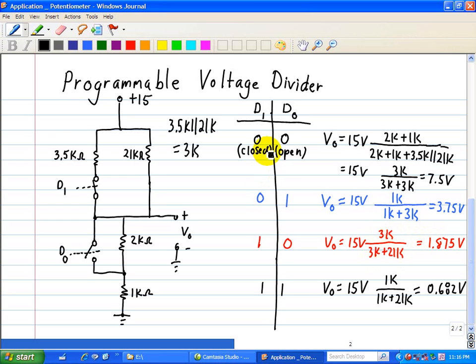Finally, we have the 1,1 state, which is just the opposite of the 0,0 state, so that means D1 is open and D0 is closed.